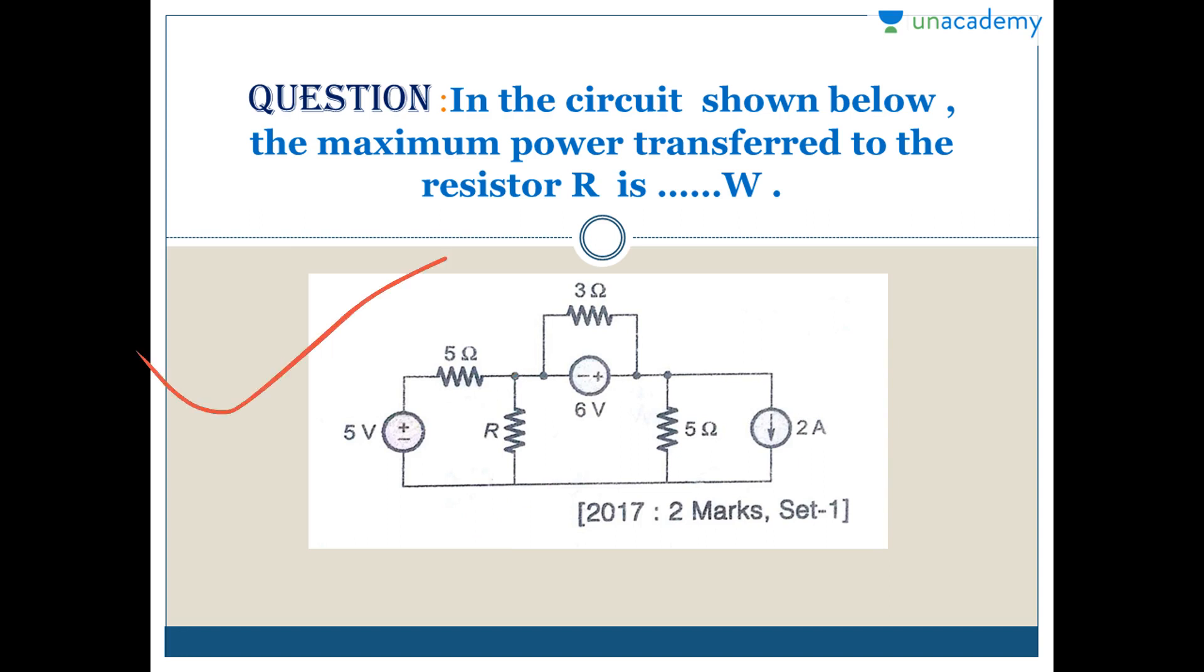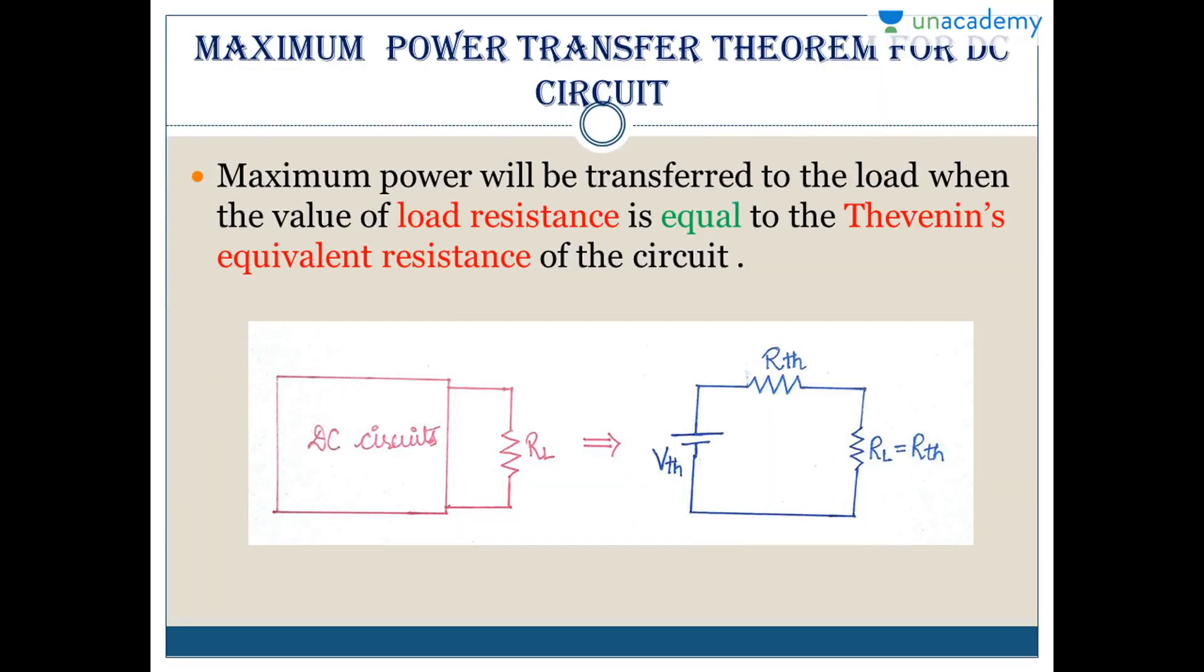We can find the power by calculating current and voltage across it, since P equals VI. We could solve it using KVL and KCL, but this circuit is quite complex, which is why we're using the Maximum Power Transfer Theorem. Let's see the magic of the Maximum Power Transfer Theorem. I'm explaining it for DC circuits only; AC circuits will be covered later.